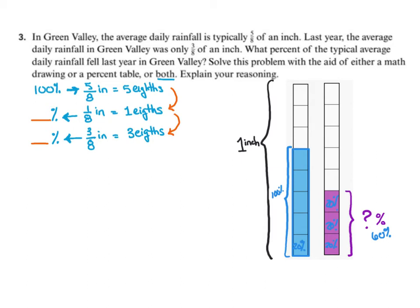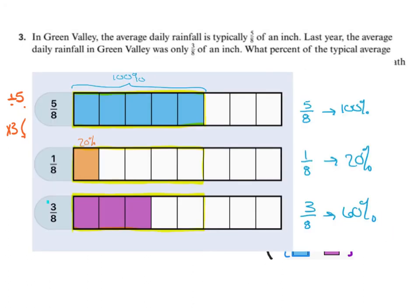So in the percent table, I've written the fraction in two ways to make it easier to see. 5 eighths of an inch in words is 5 eighths, and 1 eighth of an inch in words is 1 eighths. So to go from 5 to 1, we would divide by 5. So we need to do the same thing over here. 100 divided by 5 is going to give me the 20%. Now we want to go from 1 eighth to 3 eighths, so that means we're going to multiply by 3. And 20 times 3 is going to give us 60%, which means 3 eighths of an inch is 60% of the average rainfall.